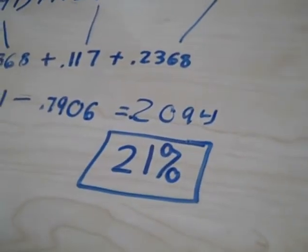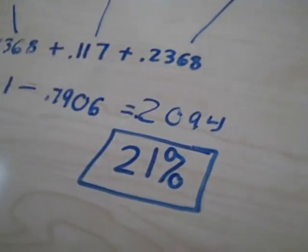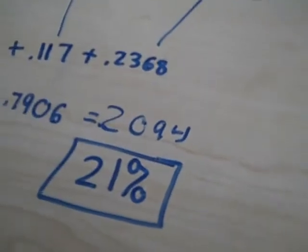And then you round it up to 21%, which is the percentage of students who were not Illinois residents.